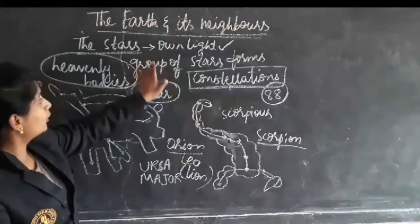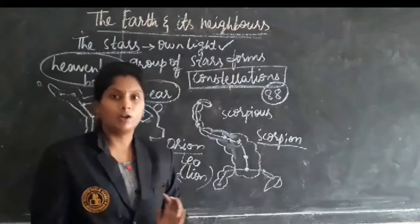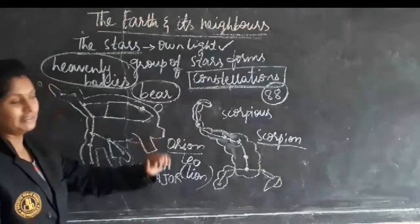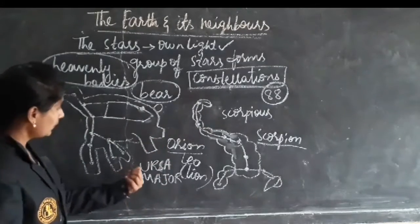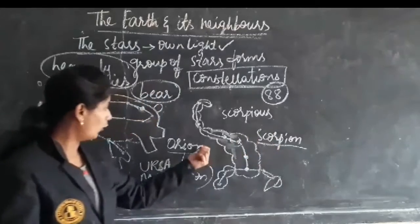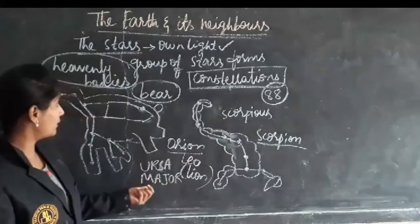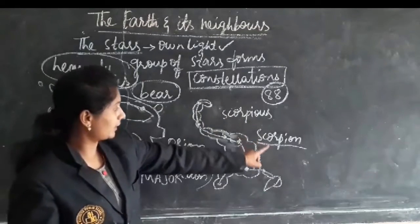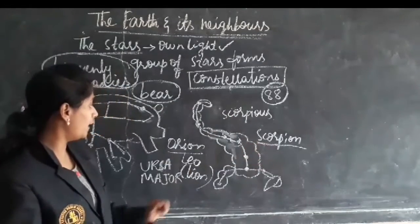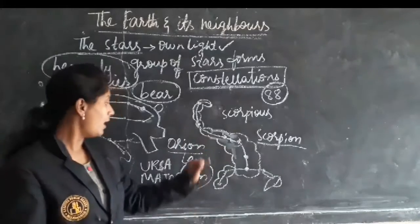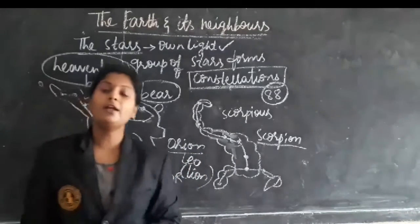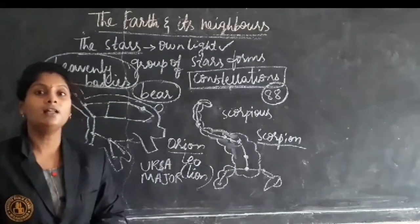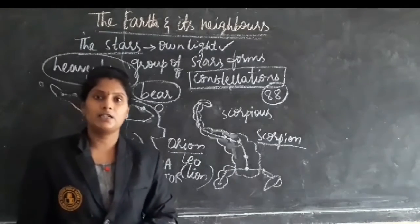Stars have their own light and the group of stars forms constellations. There are 88 constellations — Ursa Major takes the shape of a bear, Scorpius takes the shape of a scorpion, Orion takes the shape of a hunter, and Leo takes the shape of a lion. In this way, different kinds of constellations can be seen in the sky.